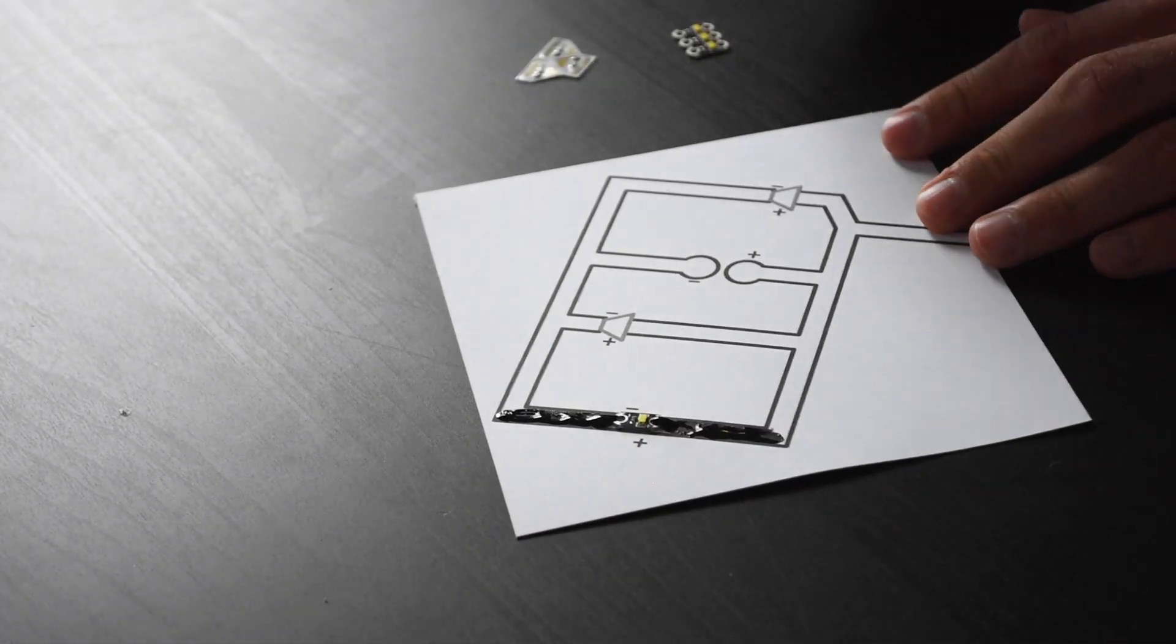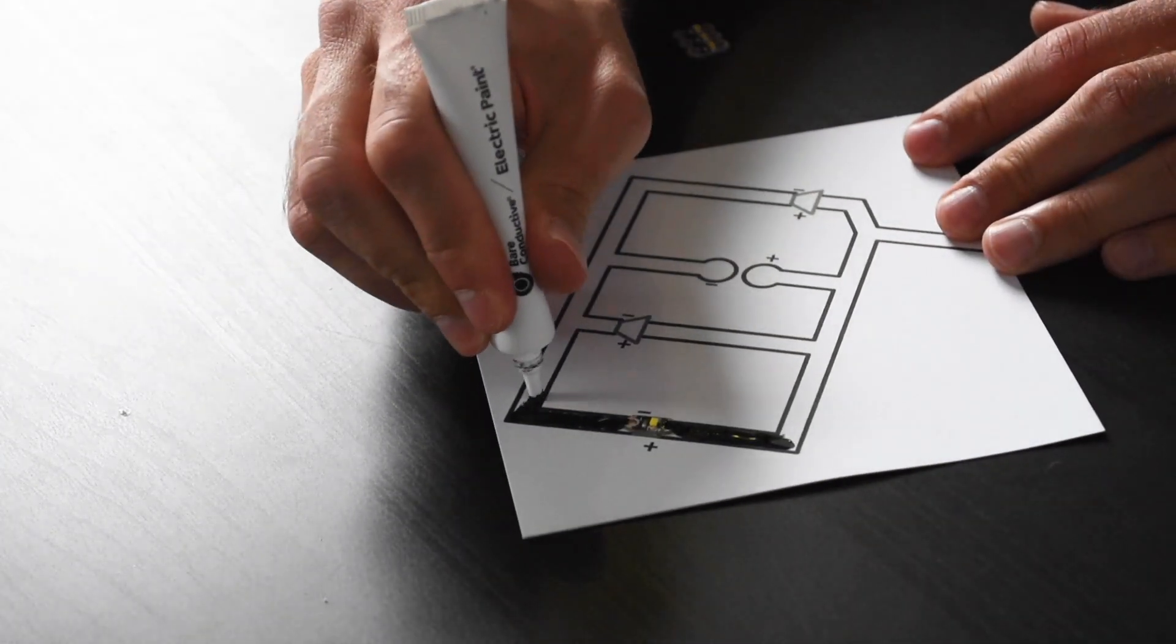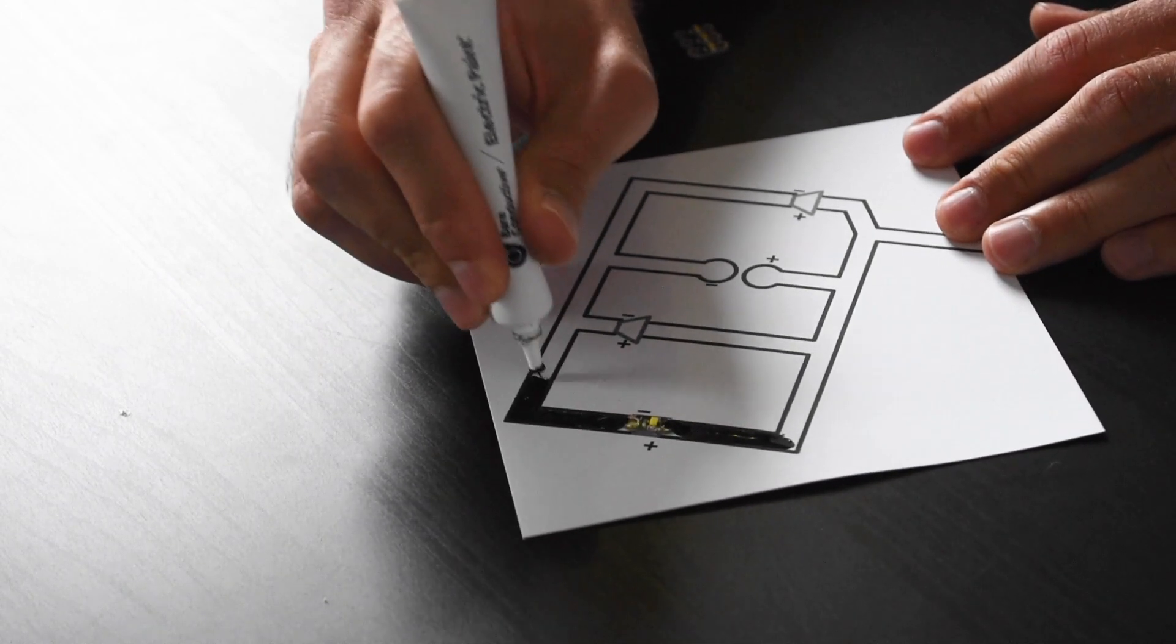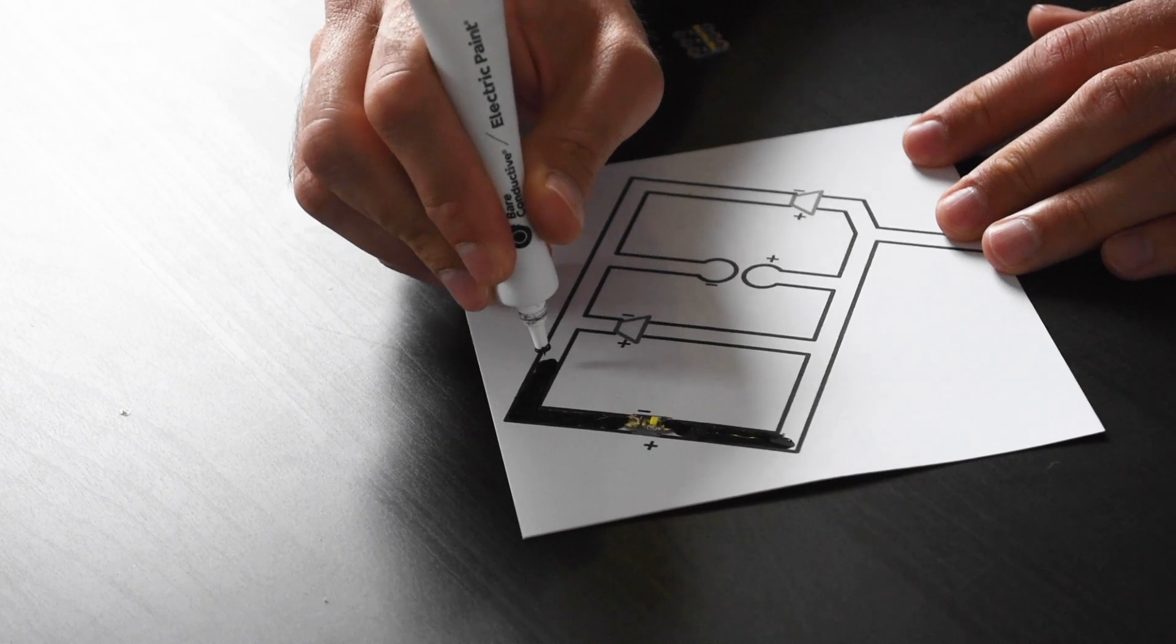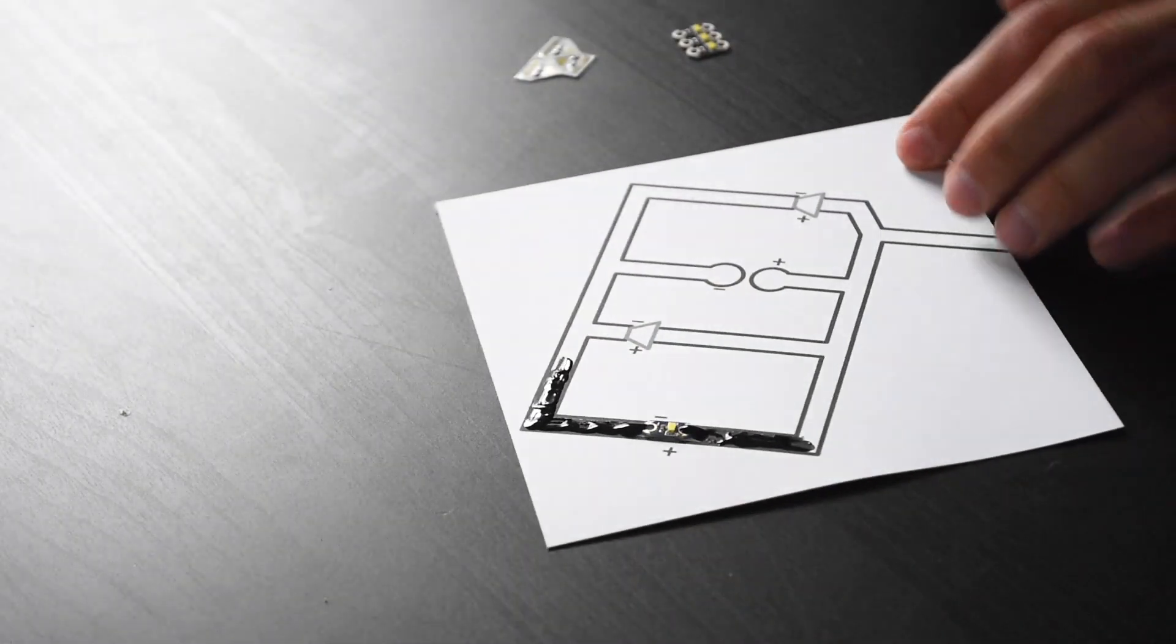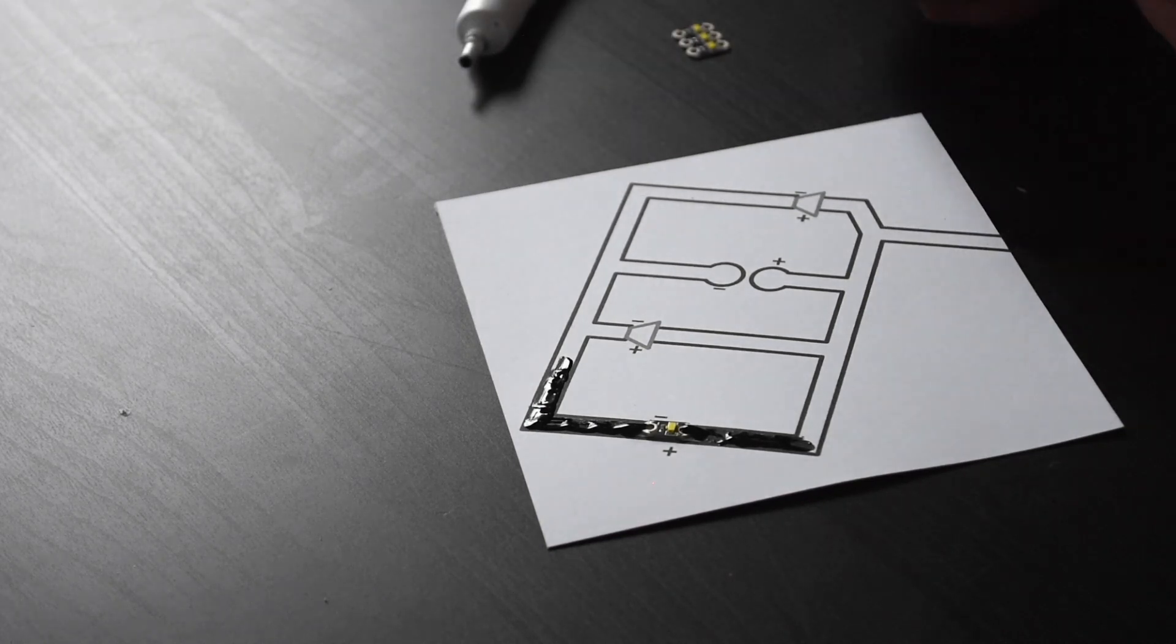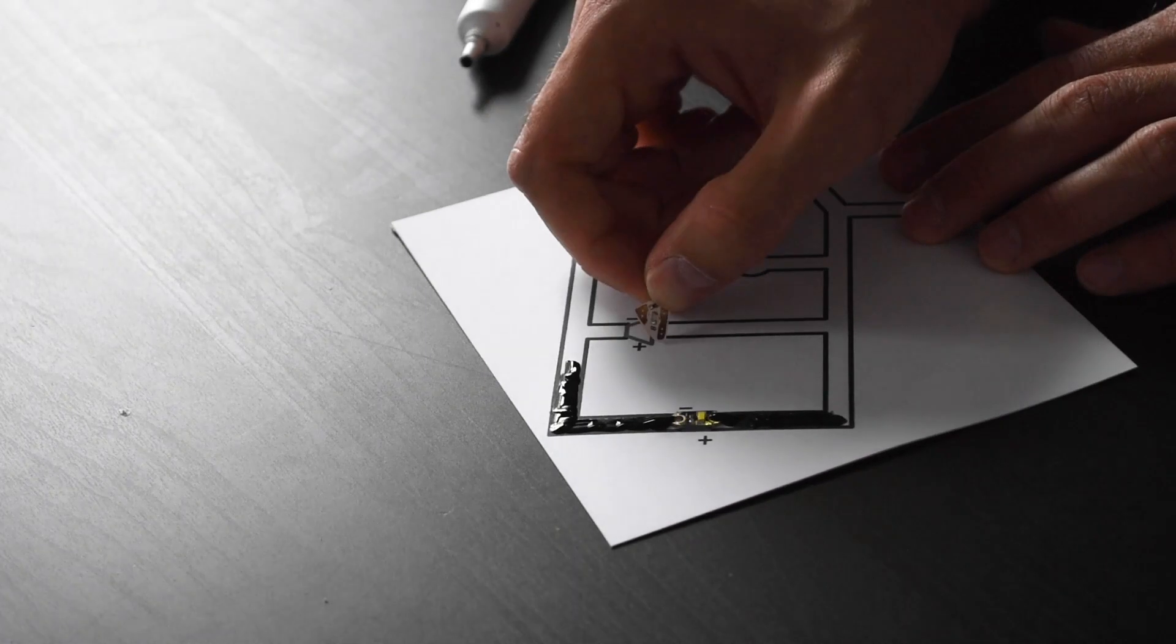Just adding a block of electric paint like so, and then filling out the circuit, holding electric paint at a 90 degree angle. Now I'm getting on to the Chibitronic LED.